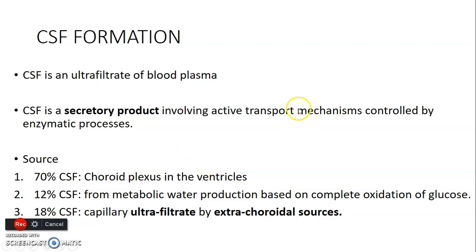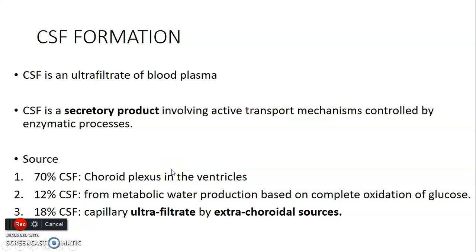What forms CSF? Mainly it's an ultrafiltrate from blood plasma, a secretory product produced by active transport mechanisms usually controlled by enzymatic processes. The majority of CSF is actually from the choroid plexus in the ventricles. The choroid plexus is formed by epithelial cells of the pia mater lying on a basement membrane, and epithelial cells of capillaries lying on a basement membrane, with these two basement membranes adjacent to each other.